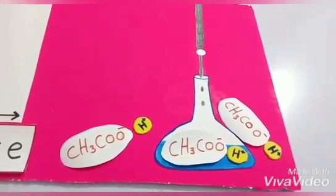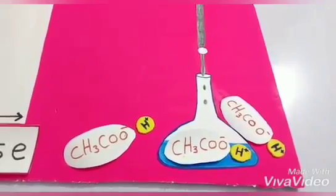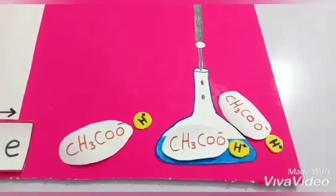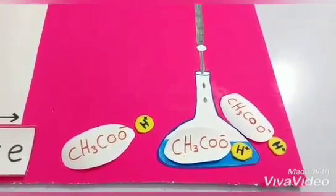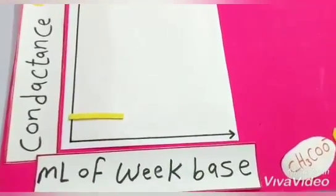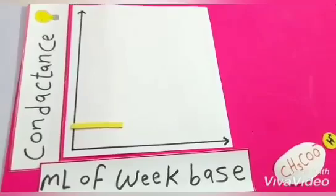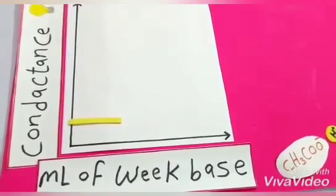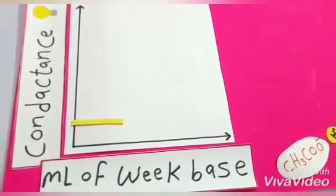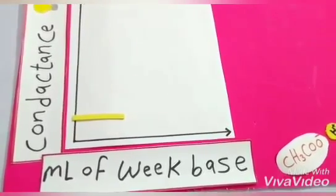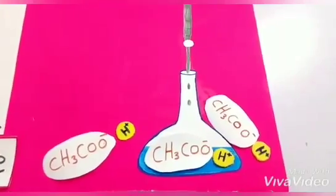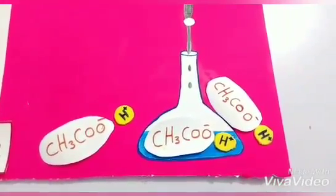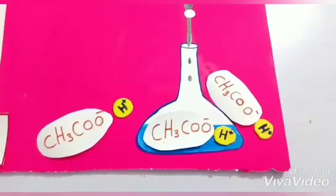Titration of weak acid against weak base. At the start, before we begin the titration, the flask only contains acetic acid, which is weakly ionized and is a weak acid. The number of hydrogen ions is low, and so the Conductance is low. This is the titration curve of weak acid and weak base. The Conductance at the start is low due to the presence of acetic acid, which is weakly ionized. When we add the weak base, Conductance decreases further due to the common ion effect, which acts as a buffer.